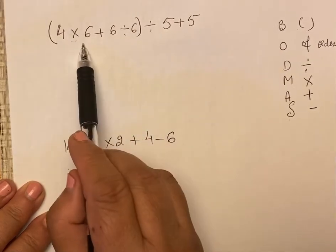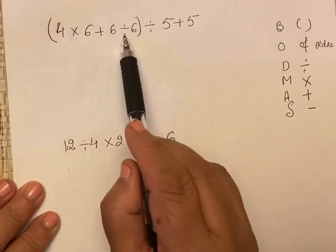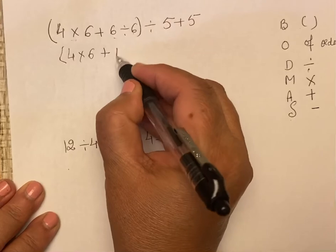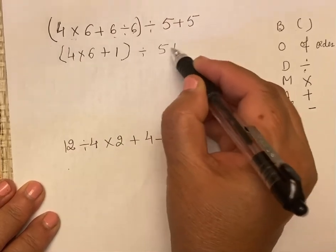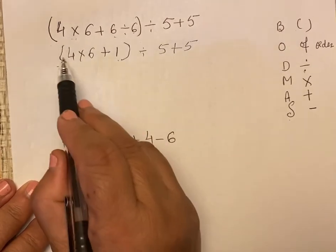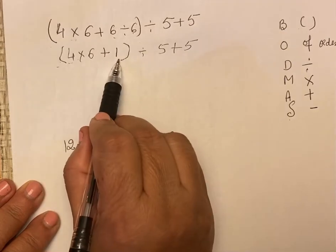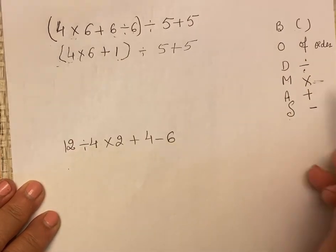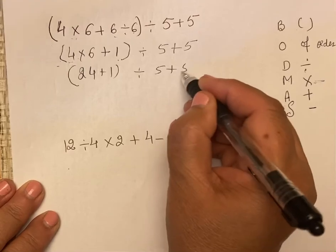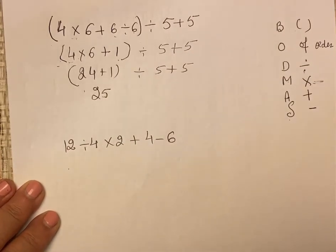Because there are multiple signs, first comes bracket, then division. That means division is there. So 4 into 6 plus 6 divided by 6 is 1. We will write, we are only solving the bracket sign, not this division. Only bracket. Now there are two signs. Which sign comes first? Multiplication or addition? Multiplication comes first. So 24 plus 1. Again, here 24 plus 1 is 25. Now our bracket is solved completely.